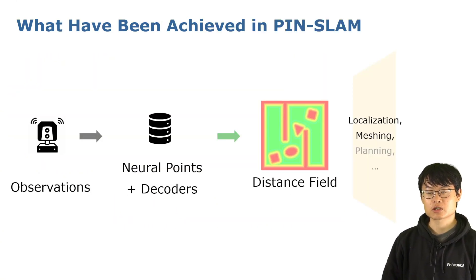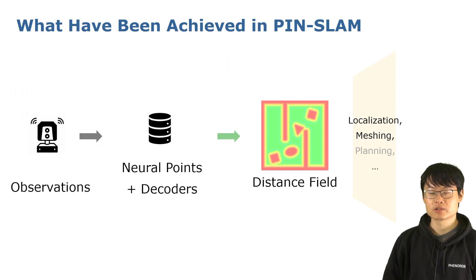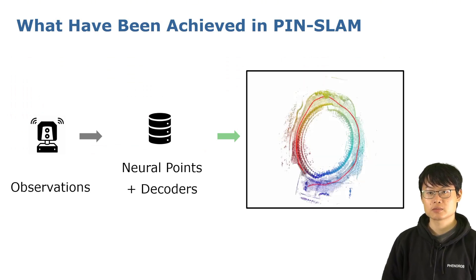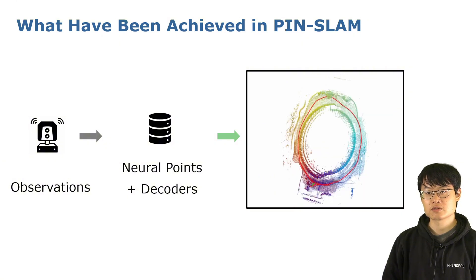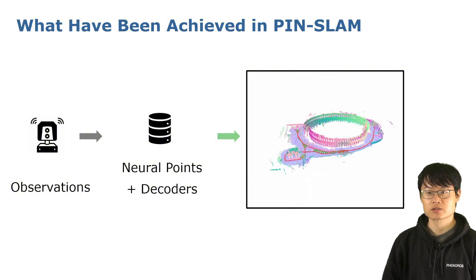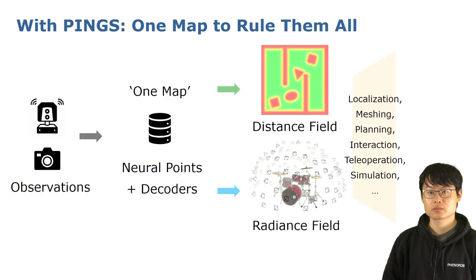In our previous work, PINSLAM, we used a neural point map to model the distance field with LiDAR. The distance field is then used for pose estimation and surface mesh reconstruction. In this work, we additionally integrate a Gaussian splatting radiance field into the neural points so that we can support all kinds of downstream tasks using a unified map representation named PINS.